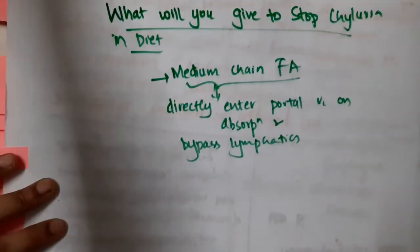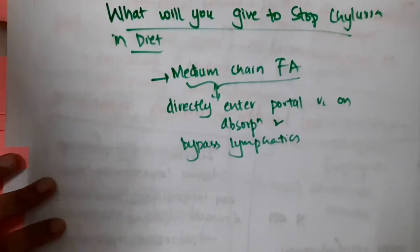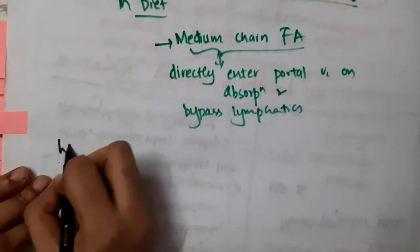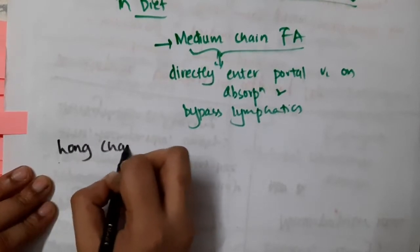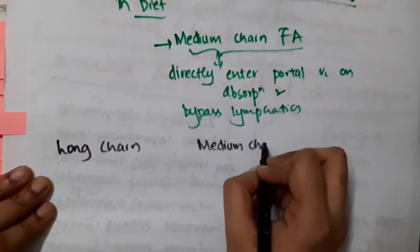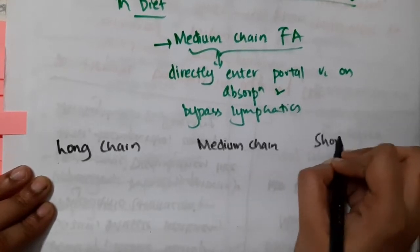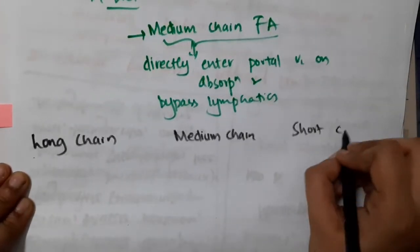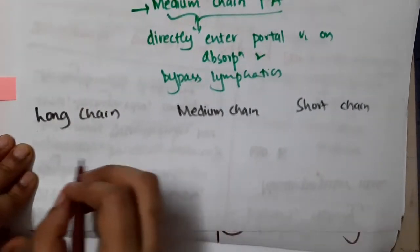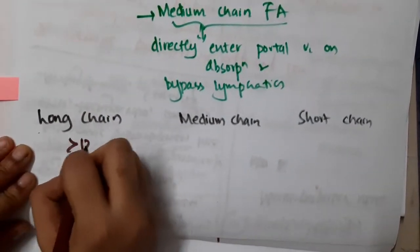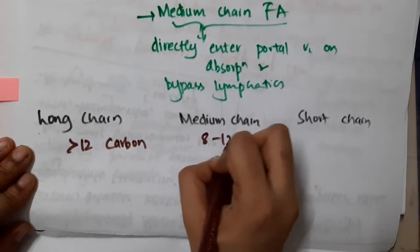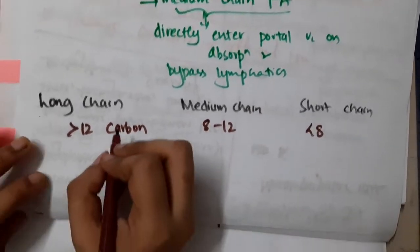Hello friends, let us now learn the differences between long chain fatty acids, medium chain fatty acids, and short chain fatty acids. If you see long chain fatty acids, the carbon length is more than 12 carbons, whereas in medium chain it is 8 to 12, and in short chain it is less than 8.